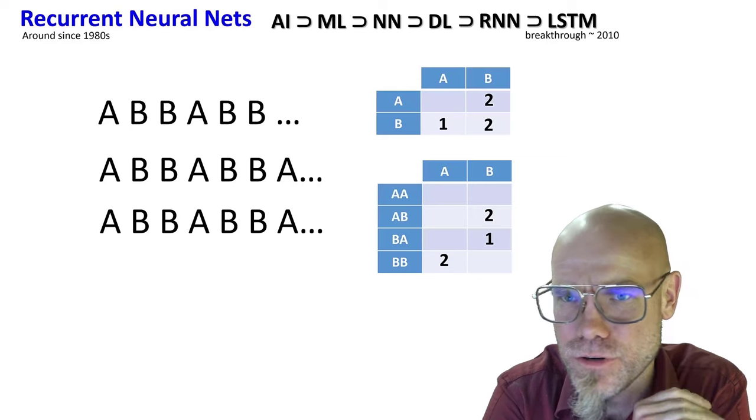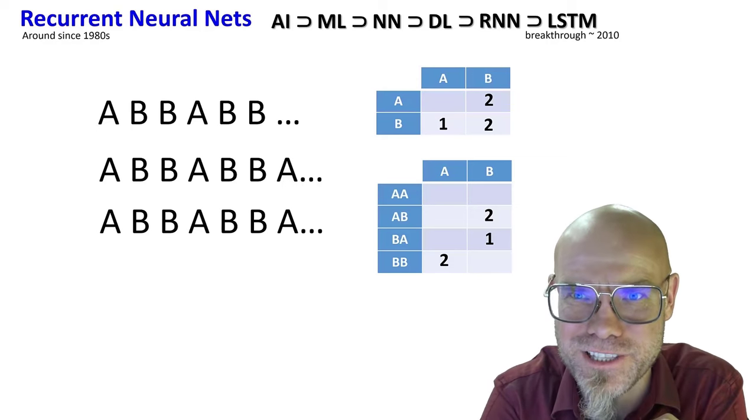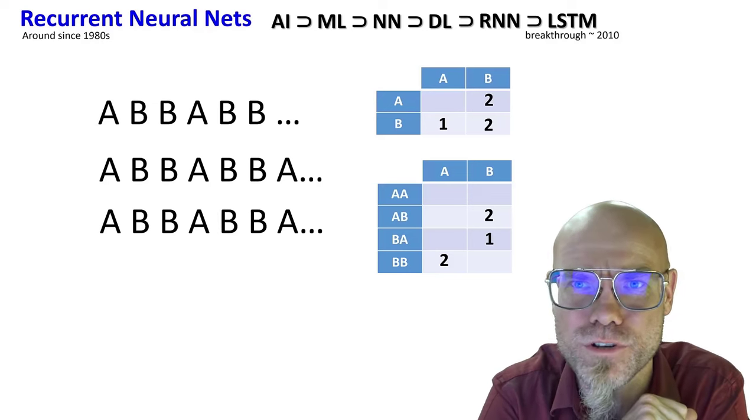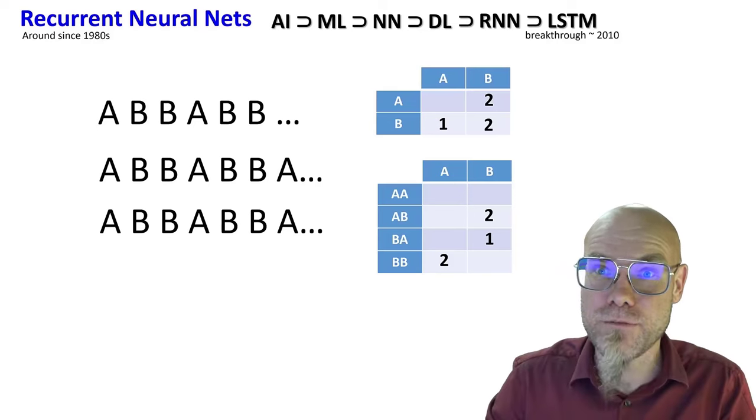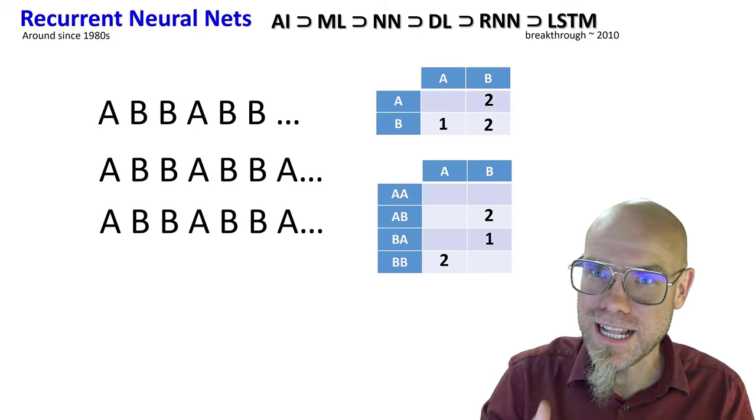We never have complete certainty. It's not deterministic like in these toy models that I come up with here in theoretical computer science. In social reality it never is, it's always a game of probability.